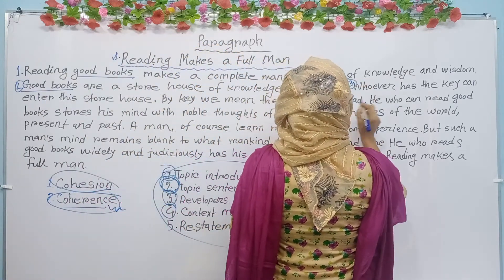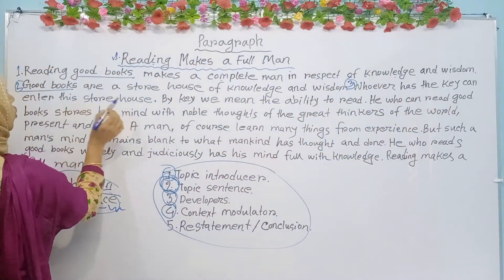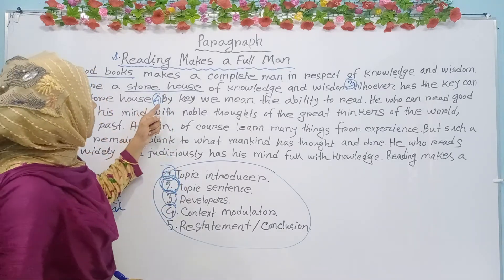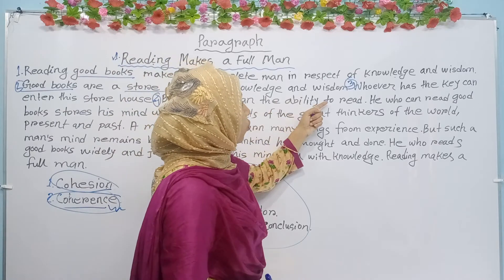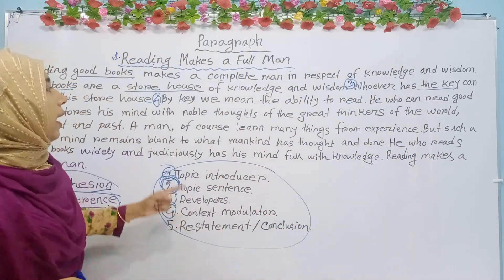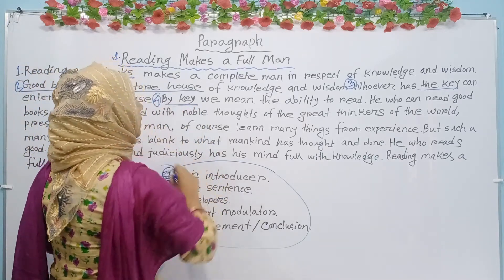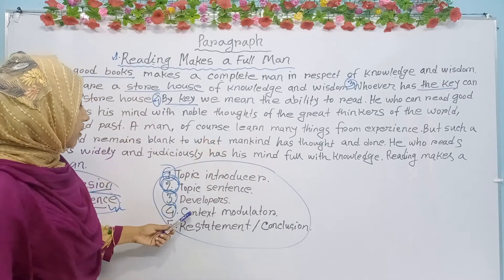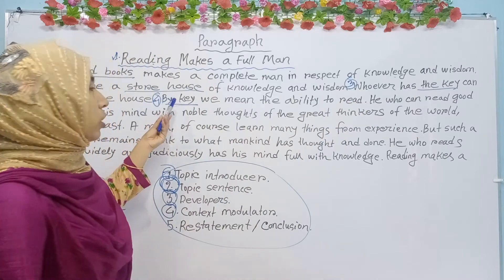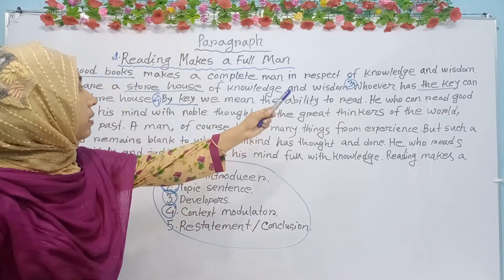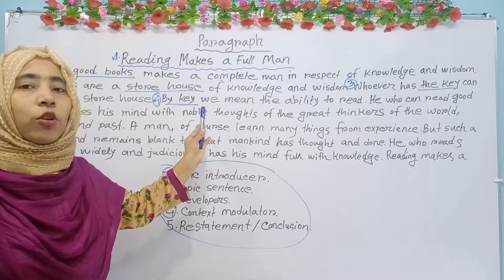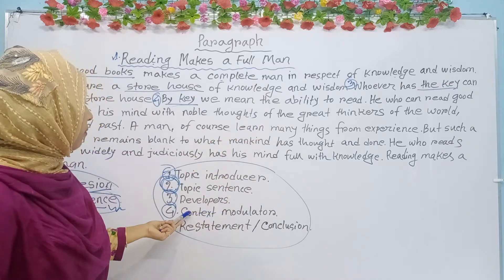For sentence number three, you see: 'Whoever has the key can enter this storehouse.' Again you see 'storehouse' — so this is also a developer. And for sentence number four: 'By key we mean the ability to read.' Look at sentence number three — here you see 'the key.' And for sentence four, again we see 'the key.' That means here we see context modulator. Context modulator maintains a link between two sentences. But key is not our main target, so it cannot be the developer — this is only for context modulator.